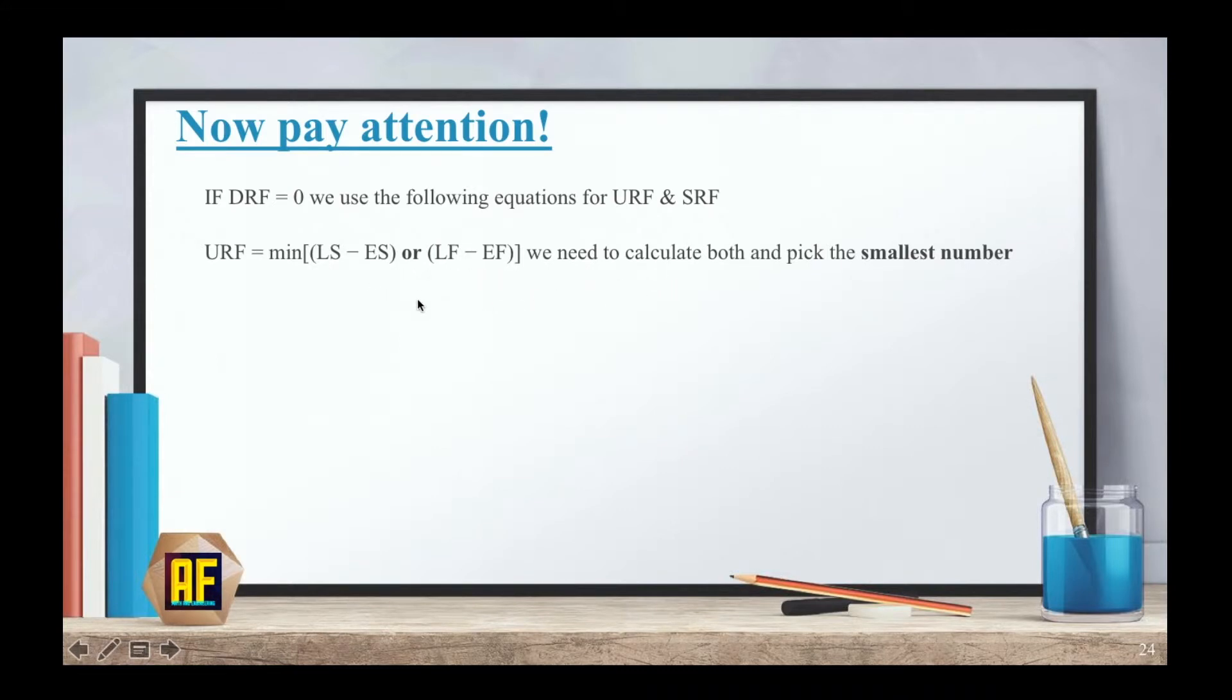As I explained before, we calculate both and we pick the smaller of the two. This is what this minimum actually says. And SRF equals the absolute value, absolute just means positive, of LS minus ES minus LF minus EF. So it's basically these two equations again, just with a minus sign between them and absolute value brackets.